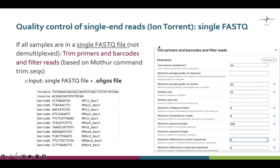Here is a view of the parameter window for this tool. We have settings for the quality scores, for removing ambiguous bases and homopolymers, and for sequence length. We can also define how many mismatches we want to allow against primers and barcodes.